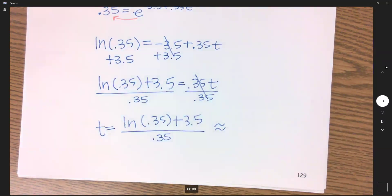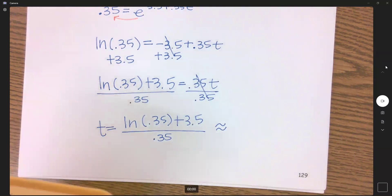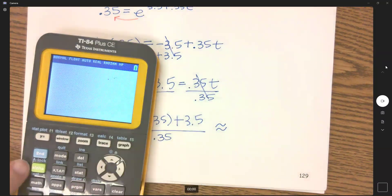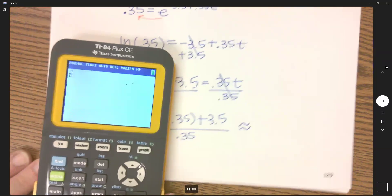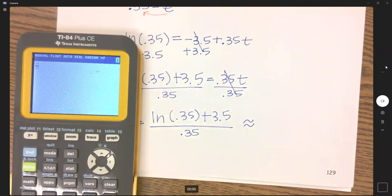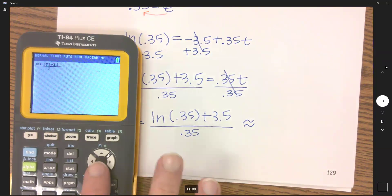Now because I have multiple things on the top, I need to use my n over d button here. So I'm going to go alpha, y equals for my fraction key, and then in the top we have the natural log of 0.35, close that, plus 3.5, and then the bottom we're dividing by 0.35.